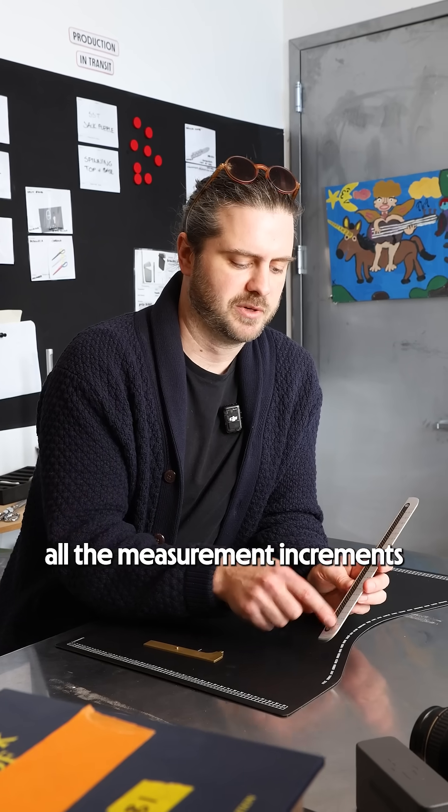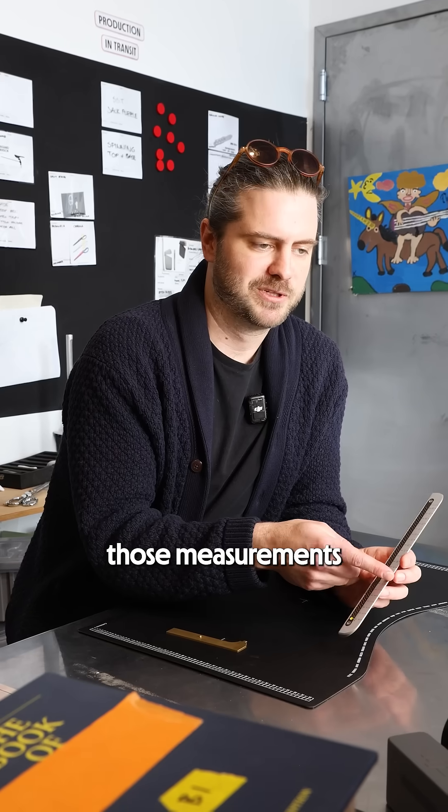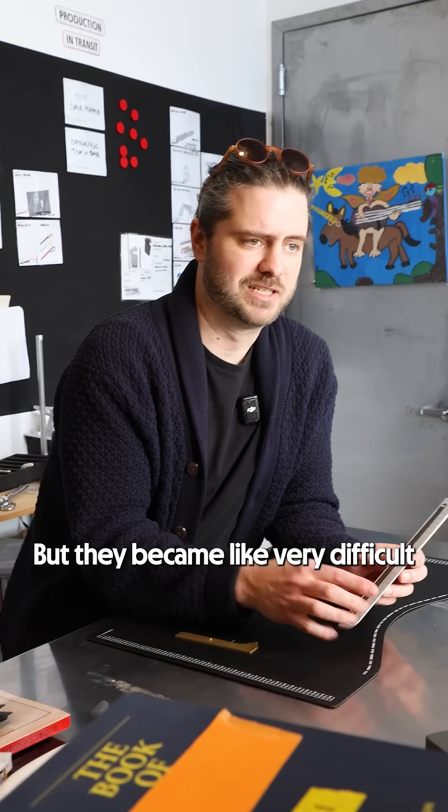There was a version that had all the measurement increments along the rail and then just straight lines that extended those measurements all the way to the edge but they became very difficult to read.